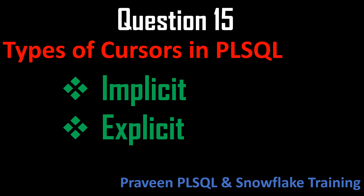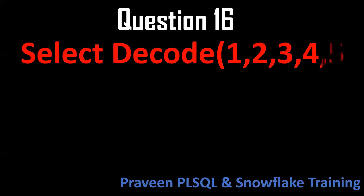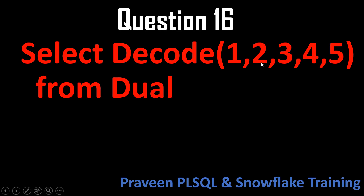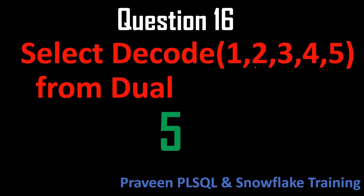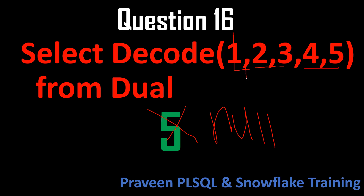Question number sixteen involves a DECODE function example: SELECT DECODE(column, 2, 3, 4, 5) FROM table. Here 2 and 4 are keys and 3 and 5 are values. If 1 is passed and it doesn't match any key, the output will be NULL. If 4 is passed and it matches, the output will be 5.